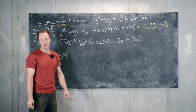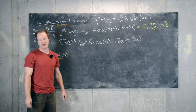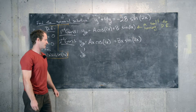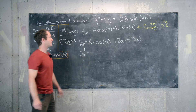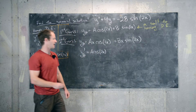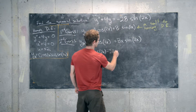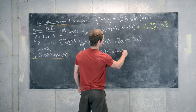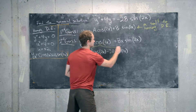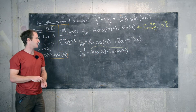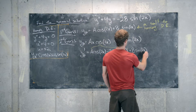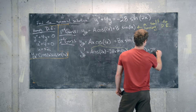Now we want to plug this into the differential equation to determine a and b. We need yp prime — we don't strictly need it for this equation, but we'll need it to calculate yp double prime. Using the product rule: yp prime equals a times cosine of 2x minus 2ax times sine of 2x, plus b sine 2x plus 2bx cosine 2x.